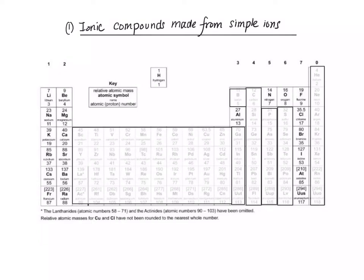So ionic compounds which are made from simple ions are ionic compounds made from combining either a group 1 metal, a group 2 metal, or aluminium with either a group 7 halogen, a group 6 element like oxygen, or a group 5 element such as nitrogen.